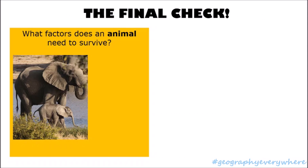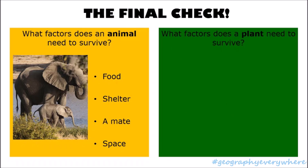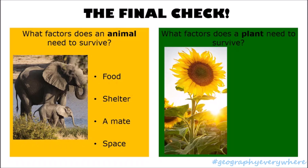Final check. After every question, pause the video and allow yourself two minutes to work them out. When you're done, press play and check your answers. What factors does an animal need to survive? An animal needs food to grow, shelter from weather and predators, a mate to produce young, and space to raise the young. What factors does a plant need to survive? A plant needs light for photosynthesis, soil, water to take up nutrients from the soil, and air to help it grow and make food.